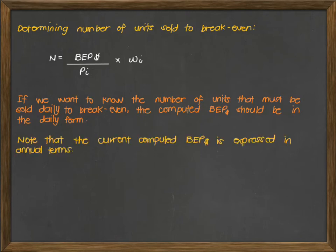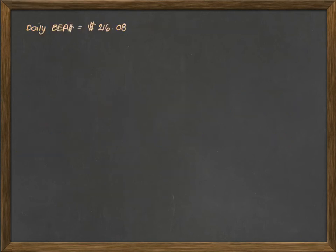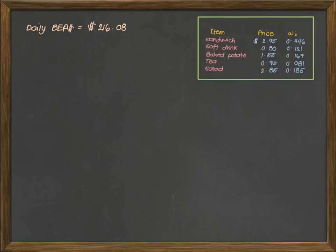We were given that the current computed break-even point is expressed in annual terms. We are also given that the annual operating days is 312 days per year. So that is simply your computed value of $67,415.73, then we divide it by 312 days per year. This should give us an answer of $216.08 per day. Now, the daily break-even point again is there. For our daily units to sell just in order for us to break-even, we start off with sandwich.